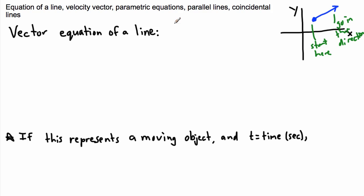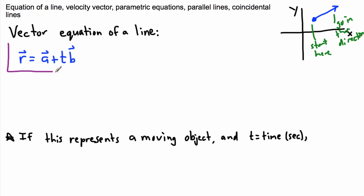We have a way of actually defining it. The official way to define it usually is with some vector that we call r, but it can be any other name. In general it goes like this: we're going to have r equals a plus t b. This is the main vector equation for a line.